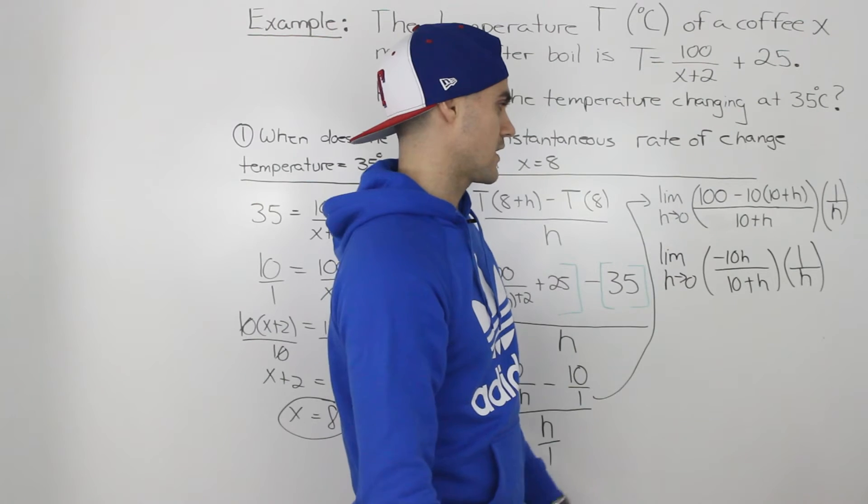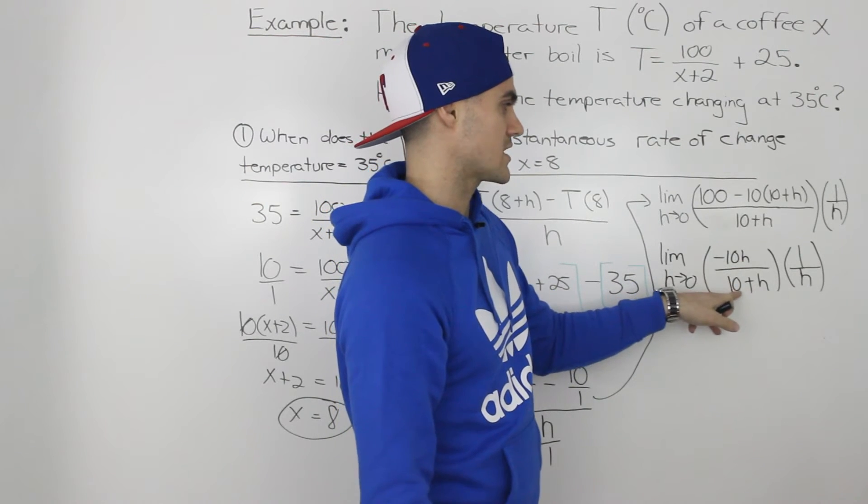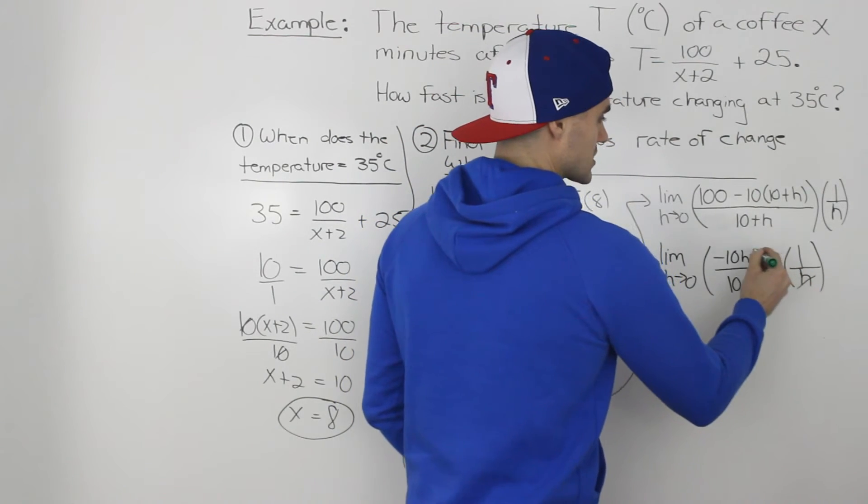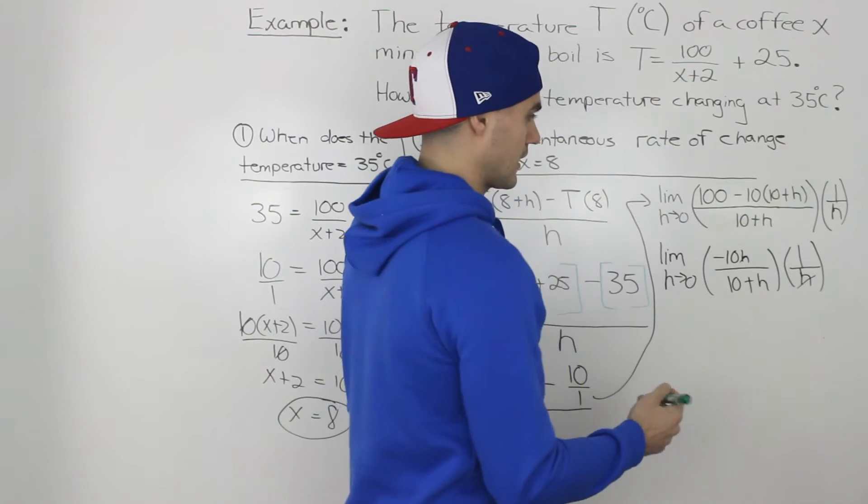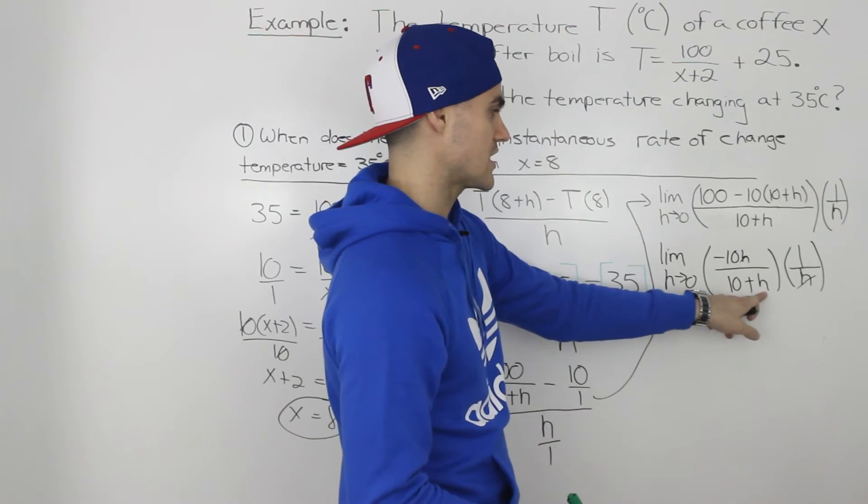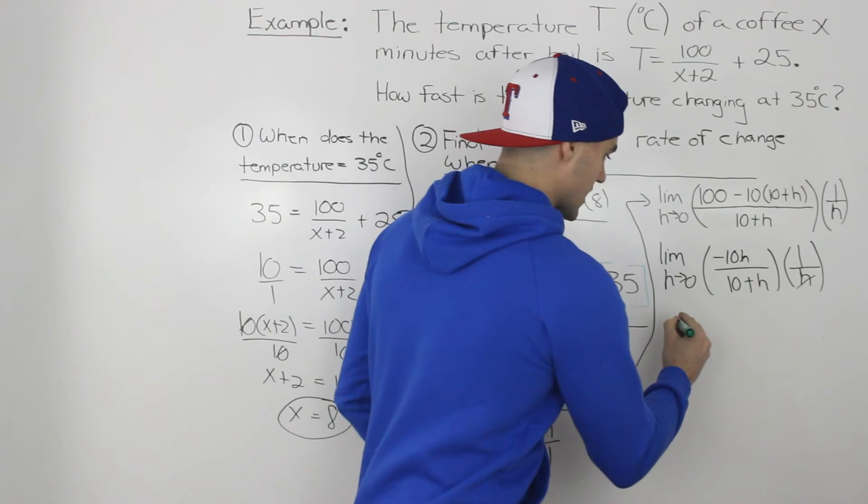And then further simplifying that numerator, we would have negative 10h over 10 plus h and multiplying it by 1 over h. So these h's cancel out. And now we can plug in 0 for h. So this h would go to 0 and we'd be left with negative 10 over 10.